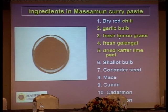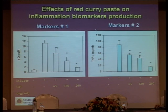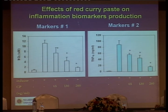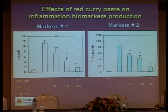This is the outcome of the effect of red curry paste on the inflammation biomarkers production. The condition of the cell experiment is the same as I explained for the individual spice. You can see that the mixed spice in the red curry paste shows the potential to reduce inflammation biomarker production in a dose-dependent manner in both marker 1 and marker 2.